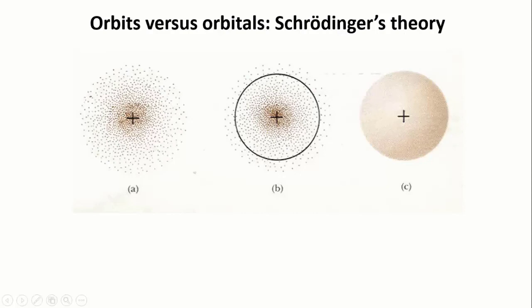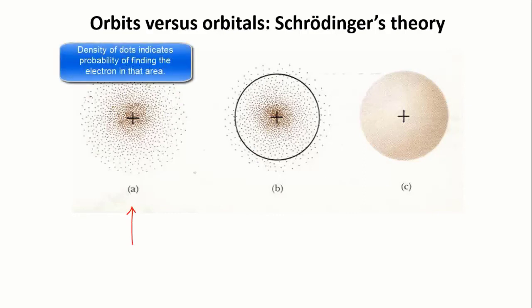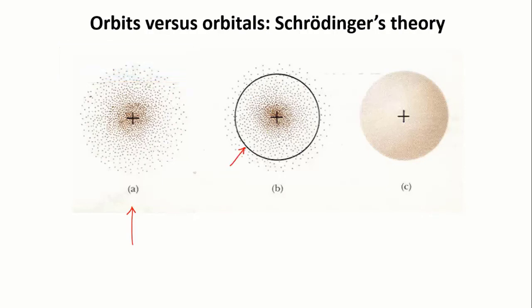Orbitals are usually represented in one of two ways. On the left here is a diagram like that on the previous slide. The density of the dots tells you about how likely it is that you will find the electron in that region for this orbital. The black circle on the middle diagram indicates the region within which there's a 90 percent probability that you will find the electron at any point in time.